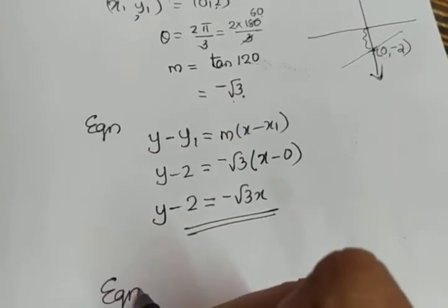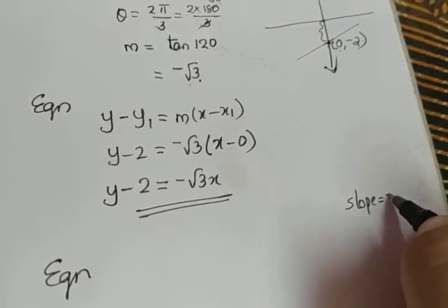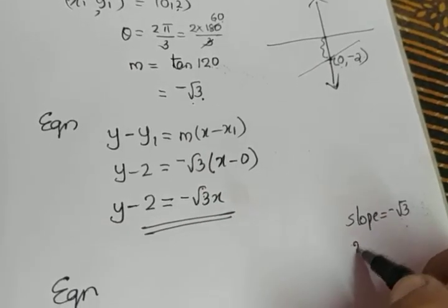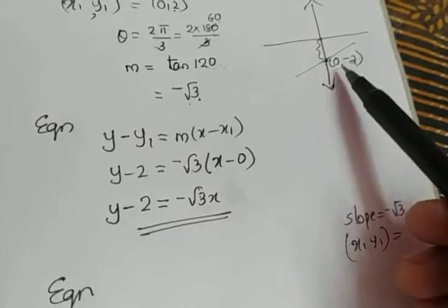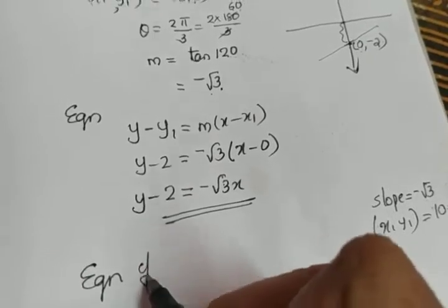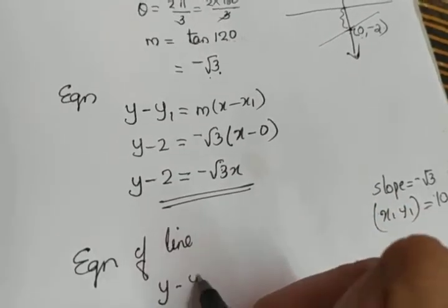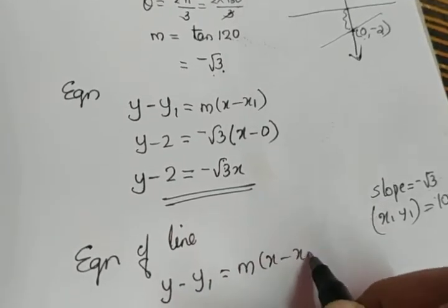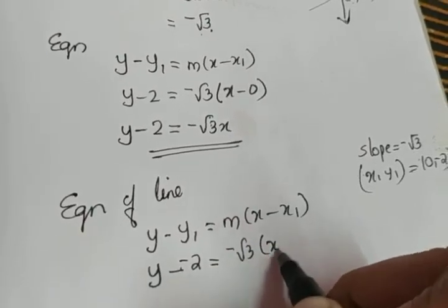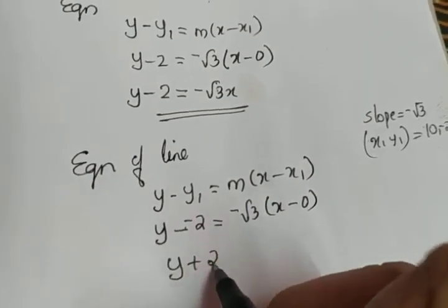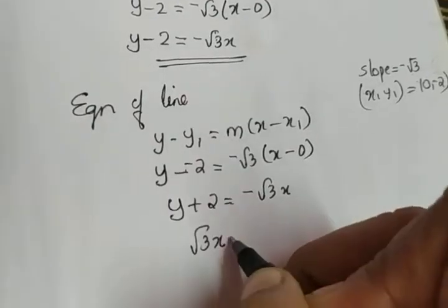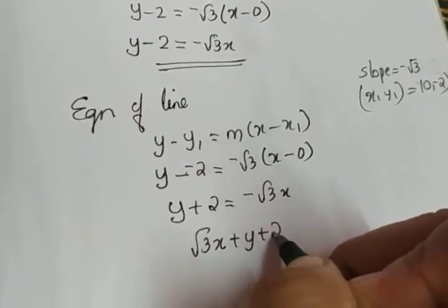We have to find the equation of the second line with slope −√3 and passing through point (0, −2). Applying y − y₁ = m(x − x₁), we get y − (−2) = −√3·(x − 0), which gives y + 2 = −√3·x. Taking −√3·x to the left side, the equation becomes √3·x + y + 2 = 0.